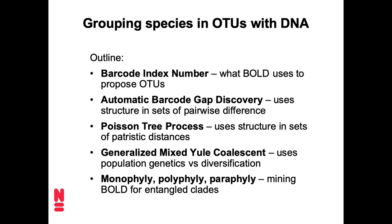Let's begin with what BOLD does. BOLD has come up with the clever acronym BIN, for Barcode Index Number — but of course, what they're doing is binning sequences. We'll see how that works, and then we will look at two methods that apply the same kind of principle, which has to do with comparing what kind of genetic diversity you would expect within species and what kind of diversity and therefore genetic distance you would expect between species. That's both the automatic barcode gap discovery method and the Poisson tree process.